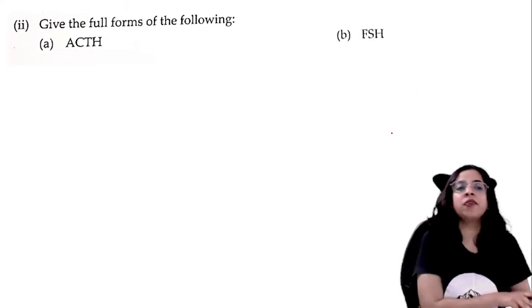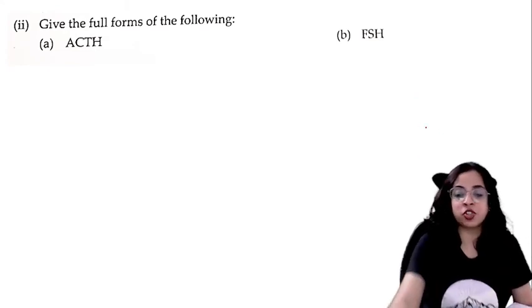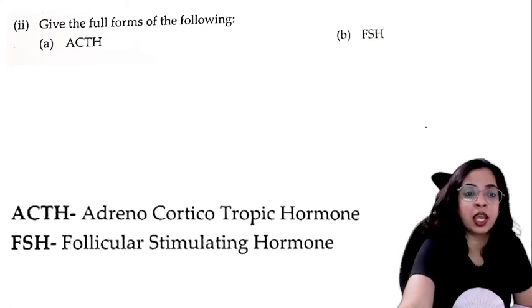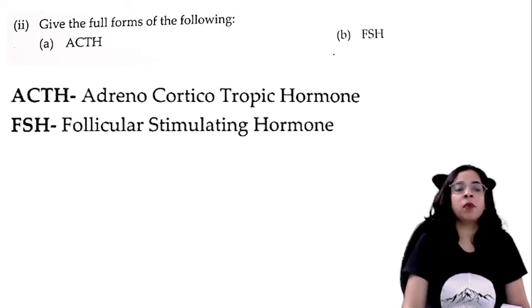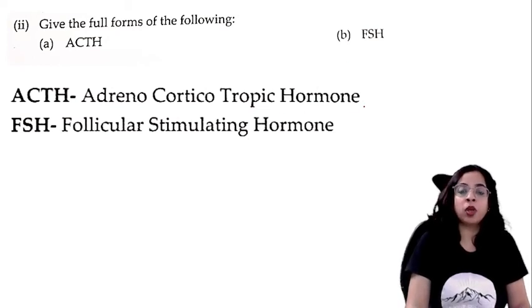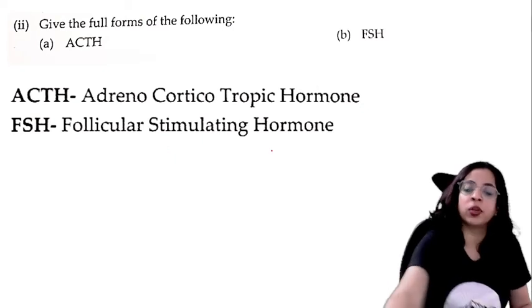Give the full forms of ACTH and FSH. ACTH is adrenocorticotropic hormone and FSH is follicle stimulating hormone.